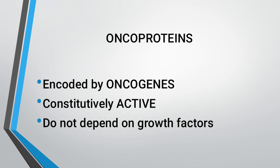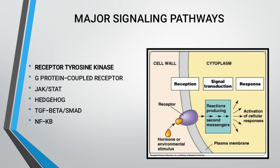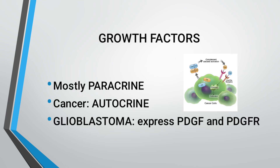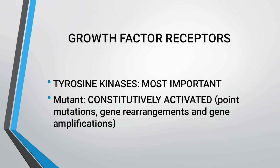Oncoproteins are encoded by oncogenes and are constitutively active; they do not depend on growth factors. Types include receptor tyrosine kinases, G-protein coupled receptors, JAK kinases, JAK-STAT, RHO, TGF-beta, NF-KB, and transcription factors. In normal cells, signaling is paracrine; in cancer, it becomes autocrine. An example is glioblastoma, which expresses PDGF and its receptor PDGFR.